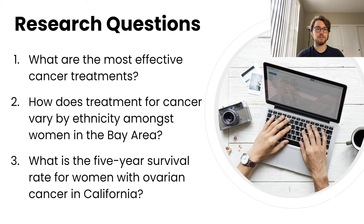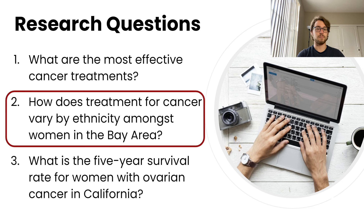Finally, let's take a look at how successful research questions are written. A research question should be selected based on something that the researcher is interested in and is researchable. This should be something that is specific and allows for a deep dive, is open-ended so that it can't be answered with a simple Google search, and has a purpose or so what to allow for discussion. Here are three example research questions. First: What are the most effective cancer treatments? This question is too broad — there are many different ways to answer it. Second: How does treatment for cancer vary by ethnicity amongst women in the Bay Area? This is significantly narrow and justifies discussion; it cannot be answered simply in a single sentence. Third: What is the five-year survival rate for women with ovarian cancer in California? This question is significantly narrow; however, it is something that can be simply searched for and answered in a single sentence. Of these, question number two is the best research question. In general, how and why questions will be most appropriate as they allow for more open-ended answers and discussion.